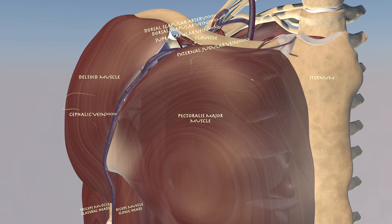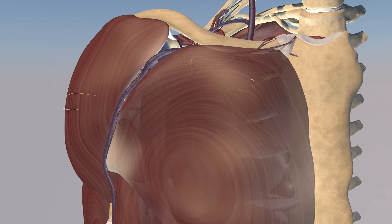Here we're going to run through some of the anatomy of the shoulder. We can appreciate the pec major muscle, which is somewhat translucent. Just lateral to that you have the deltoid muscle, and in the interval between the pec major and the deltoid muscle you can appreciate the cephalic vein.